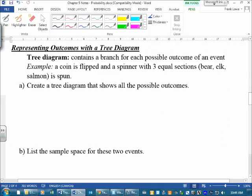Now, here's a tree diagram. So same thing we're doing. We're flipping a coin and spinning a spinner. Oh no, we're doing something different. A spinner with three equal sections.